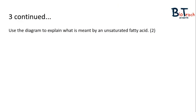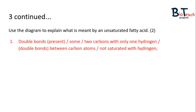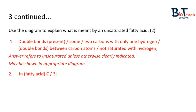The second part of question number three asks you to use the diagram to explain what's meant by an unsaturated fatty acid. This is for two marks. Unsaturated fatty acids have double bonds present between some of the carbon molecules. They could also have more than one double bond present. You could also say that the carbons are not saturated with hydrogen. For the second mark, you would say that the fatty acid that is unsaturated is fatty acid C, just so that you are demonstrating that you understand which one is the unsaturated one.